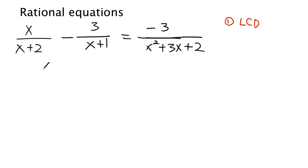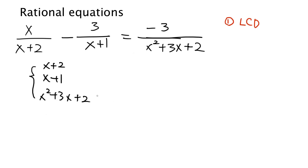There are three denominators: x plus 2, x plus 1, and x squared plus 3x plus 2. To find the least common denominator of these three denominators, we need to factor everything. So x plus 2 and x plus 1 are already in factor form — two terms together are one factor. x squared plus 3x plus 2 we can factor out as x plus 1 times x plus 2.